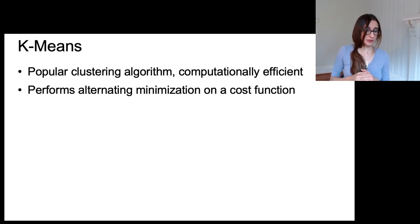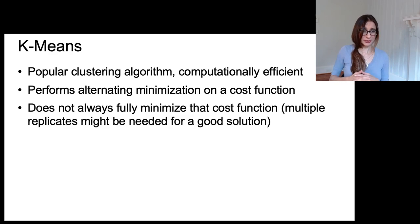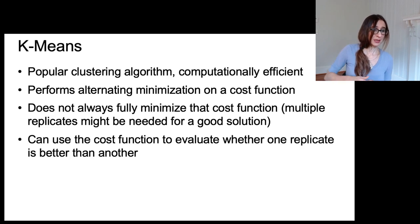It performs alternating minimization on a cost function. However, it doesn't always fully optimize that cost function, which is why you might need multiple replicates for a good solution. And you can use the cost function itself to evaluate whether one replicate is better than another because the replicate with the lower cost is the one that was better.